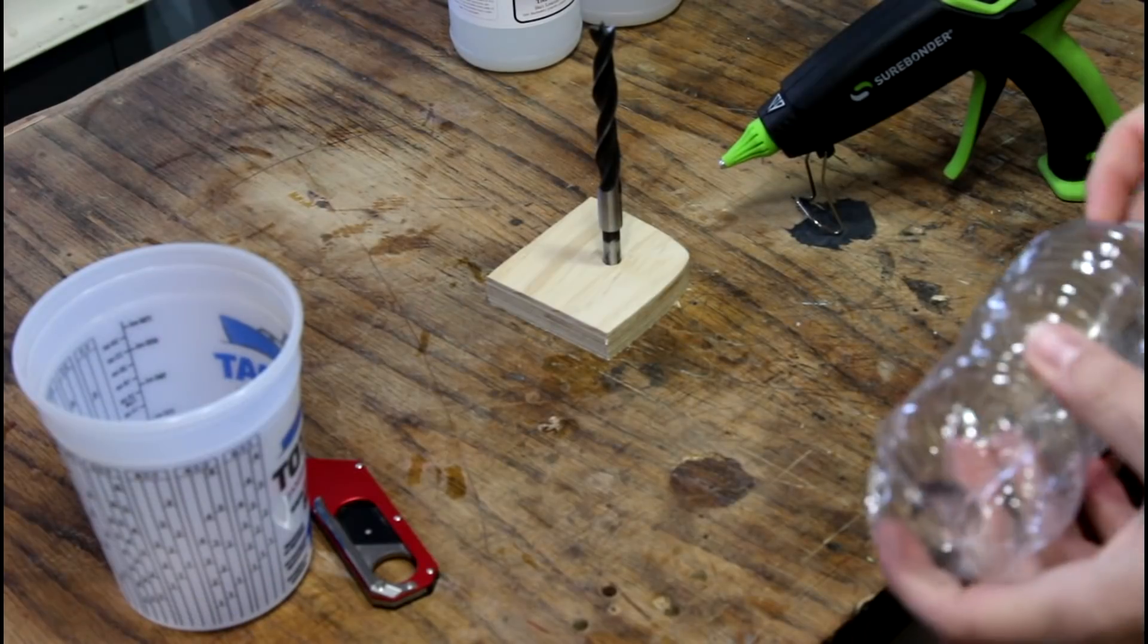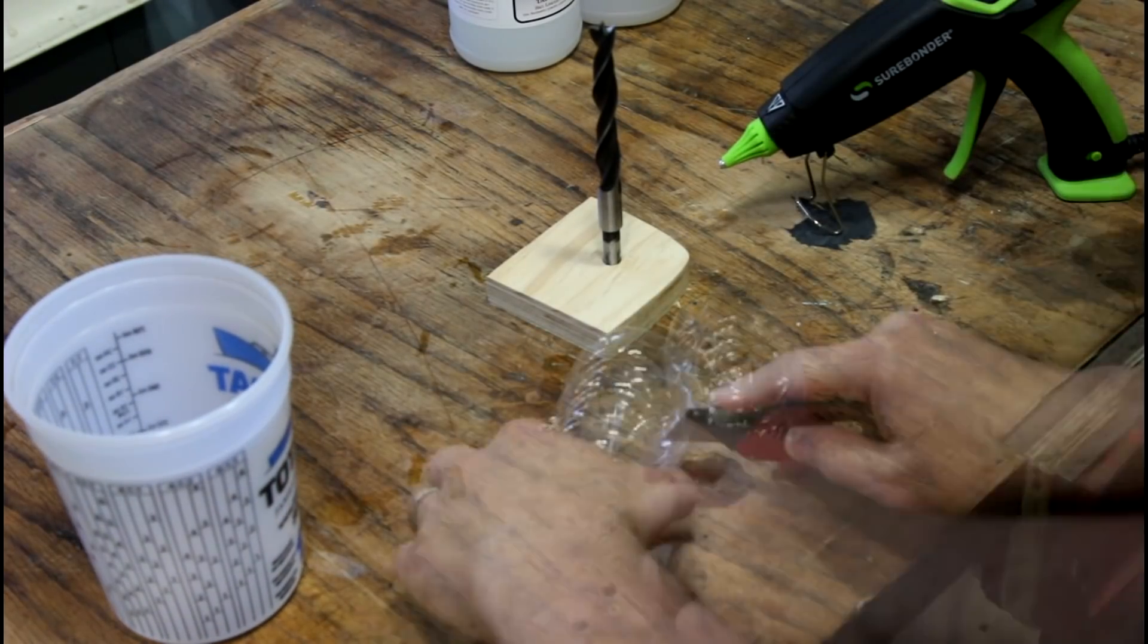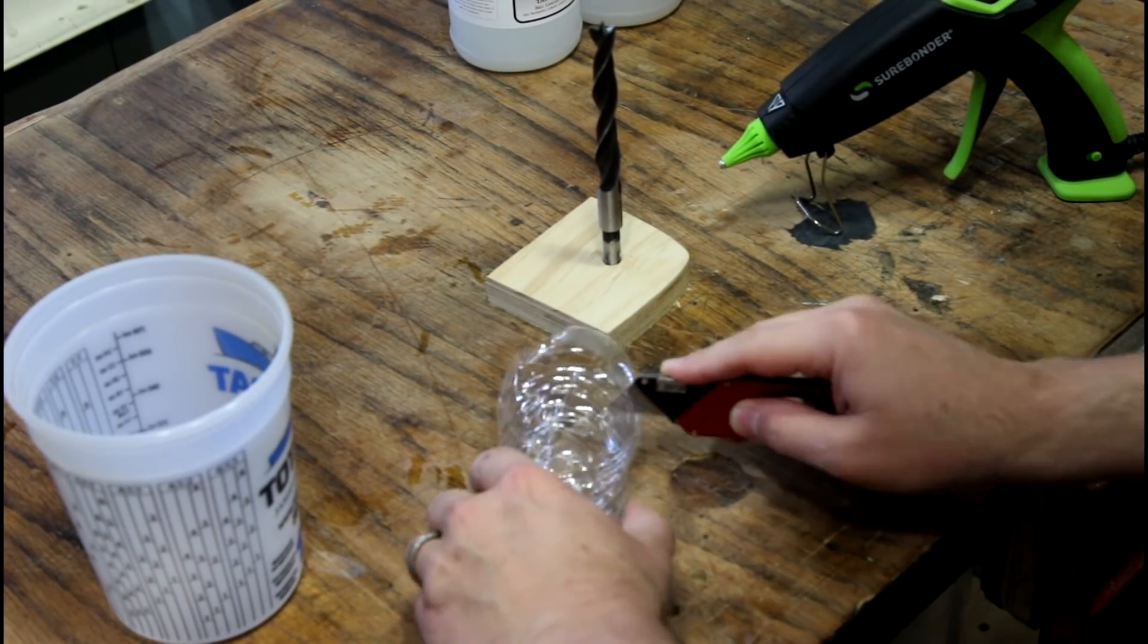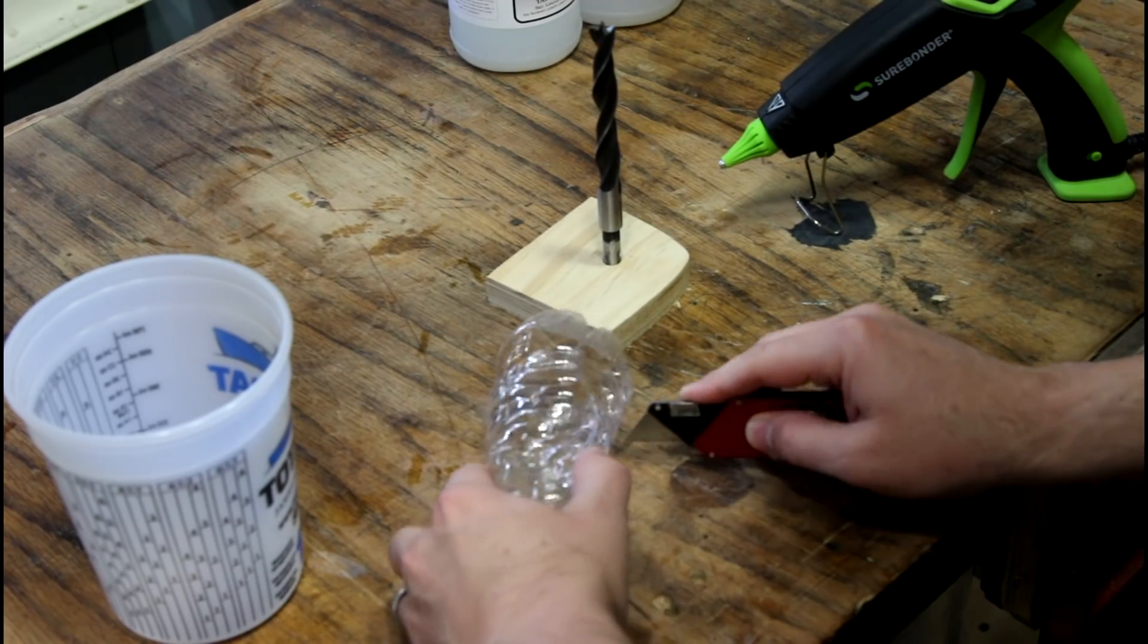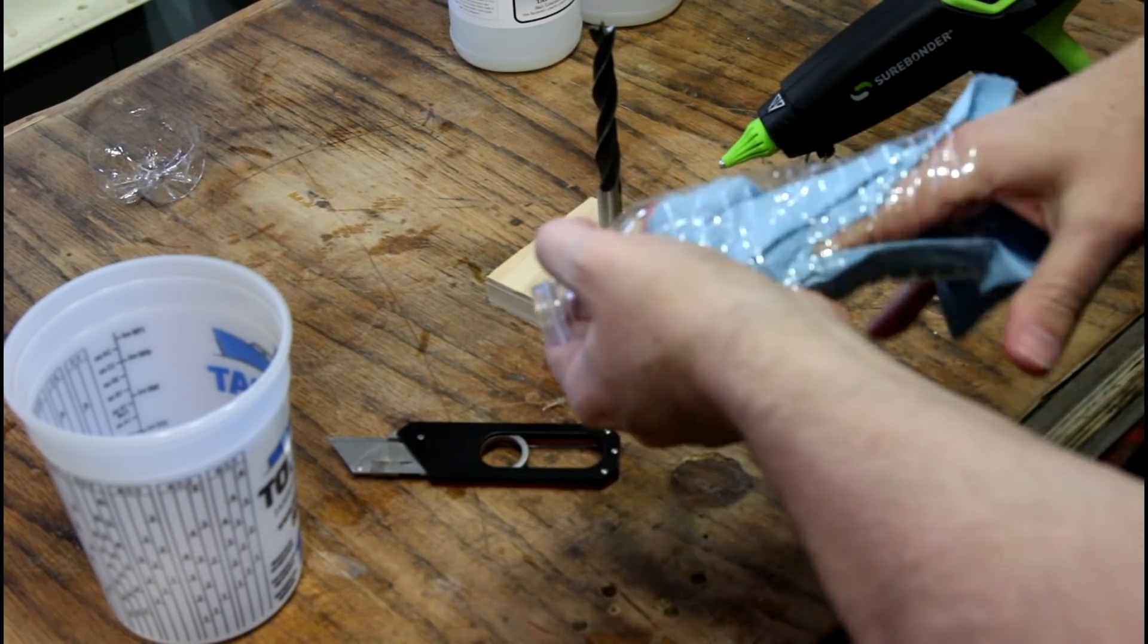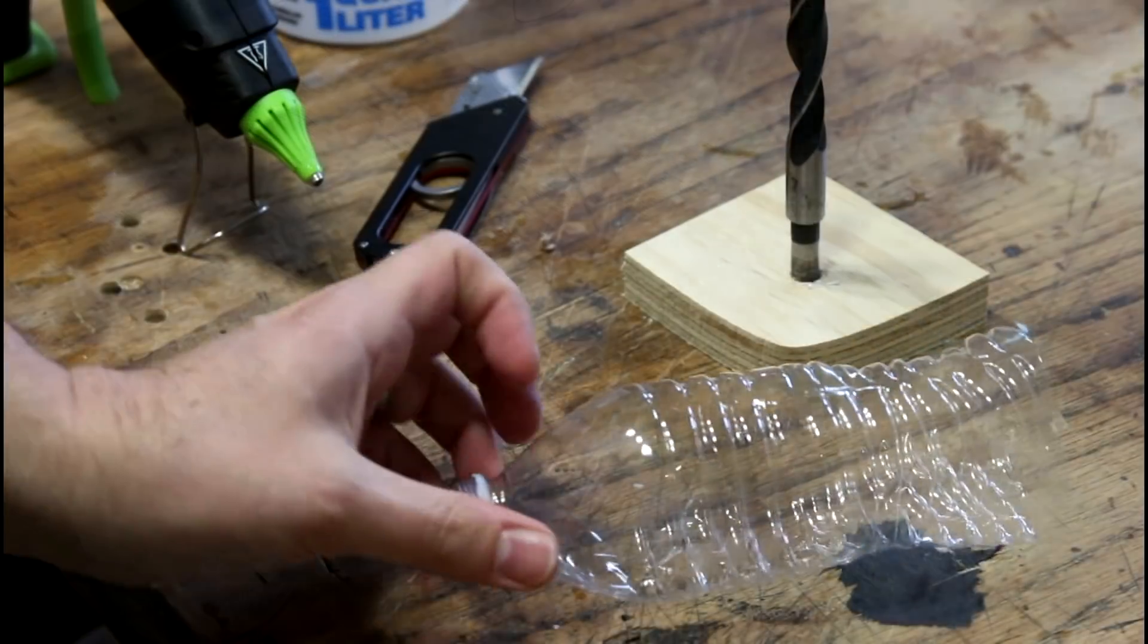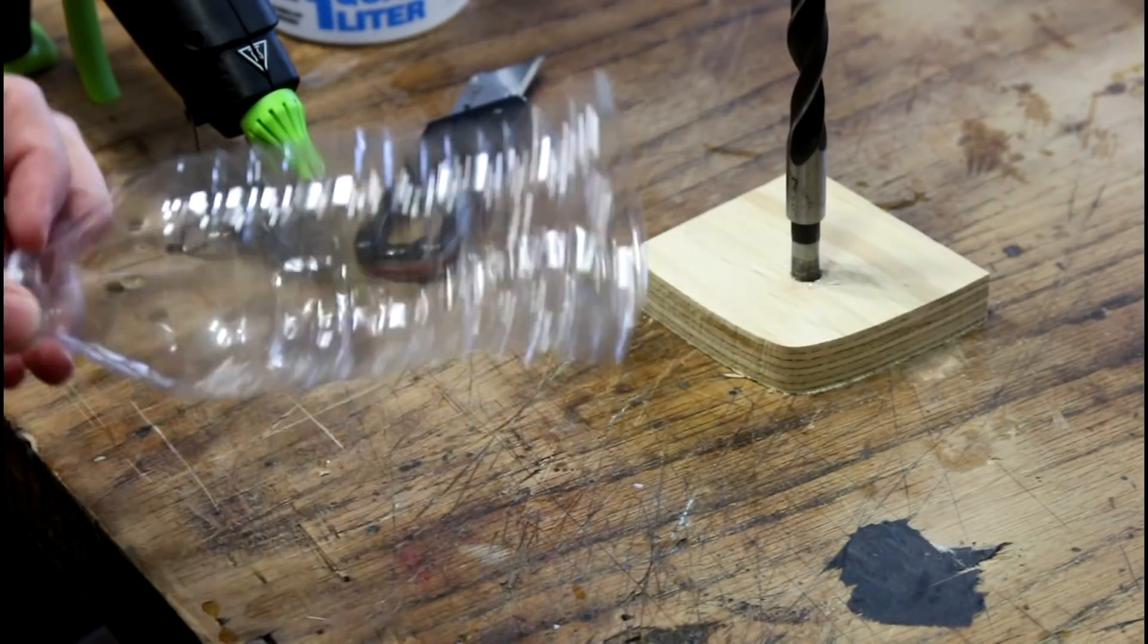And then we're just going to cut off the end of this empty plastic bottle. This is really thin plastic, but it should be okay, I think.